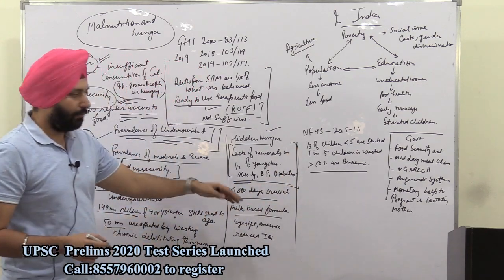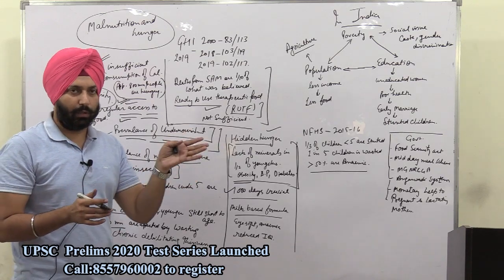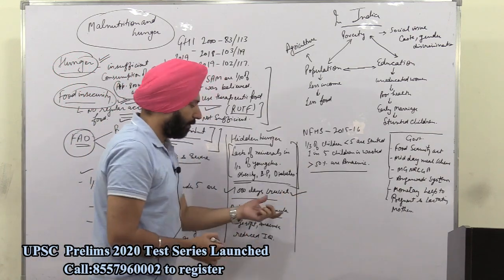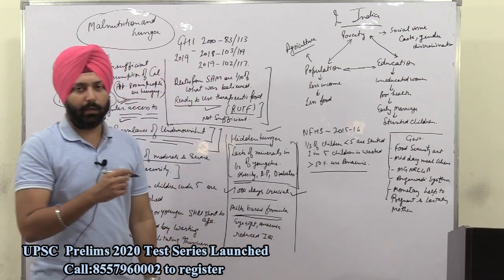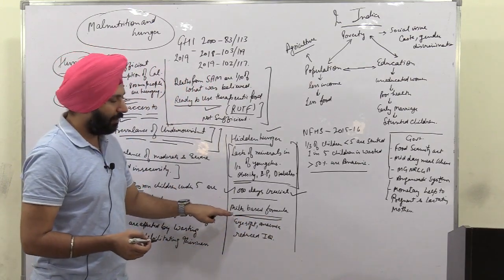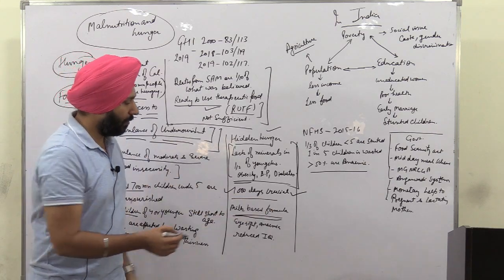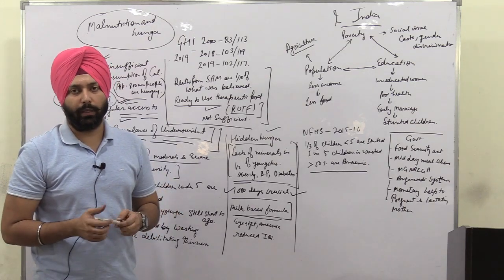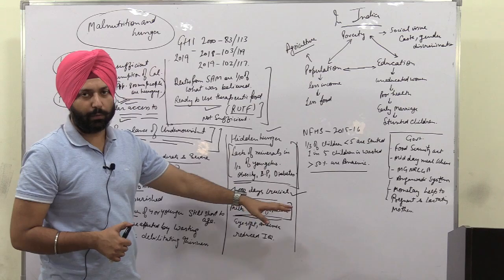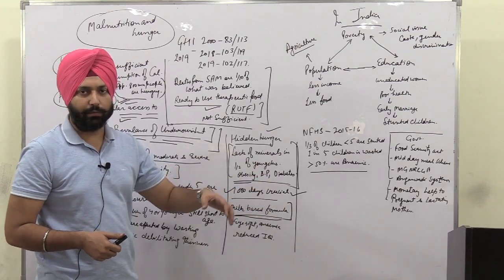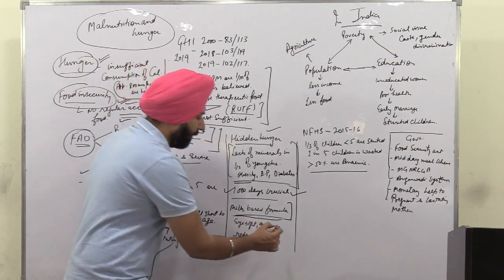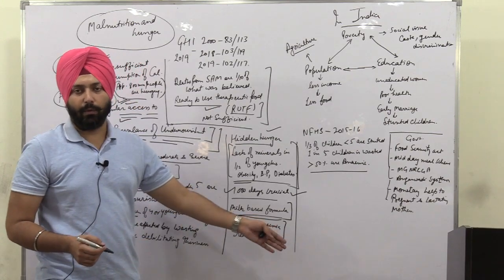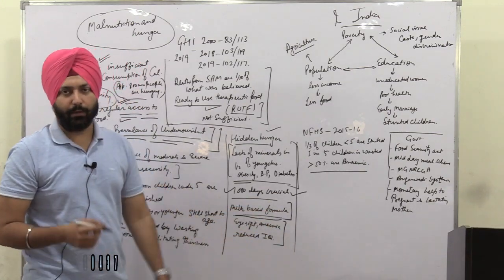The first thousand days from conception are critically important but are often ignored in terms of providing proper diet and nutrients. Moreover, most children in metropolitan cities are not breastfed by their mothers due to lack of time or lifestyle problems. This leads to diseases like eyesight problems, anemia, and reduced IQ — problems being faced by youngsters in metropolitan cities.